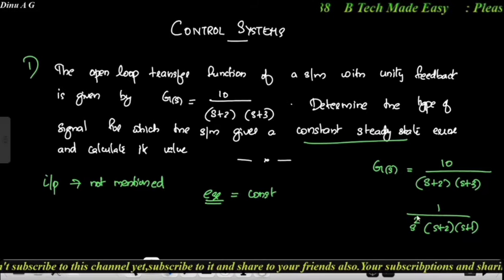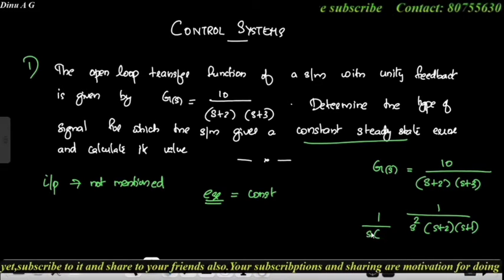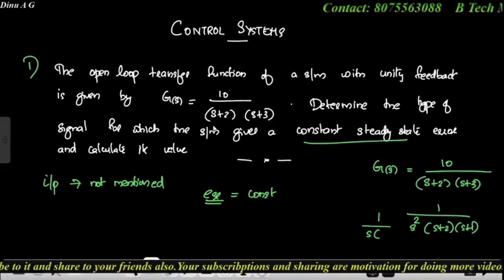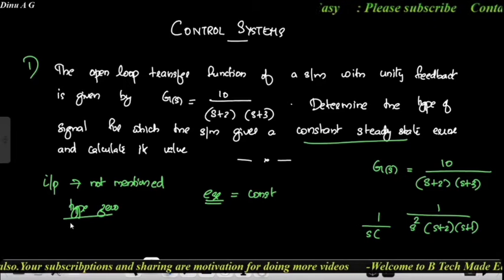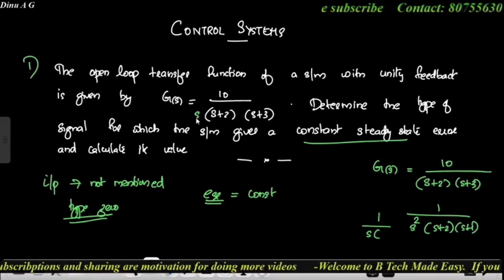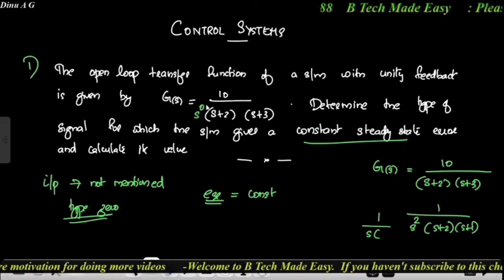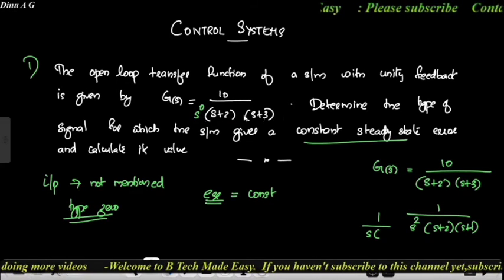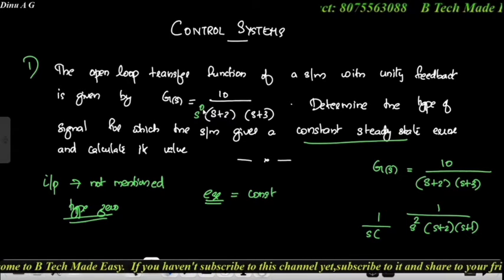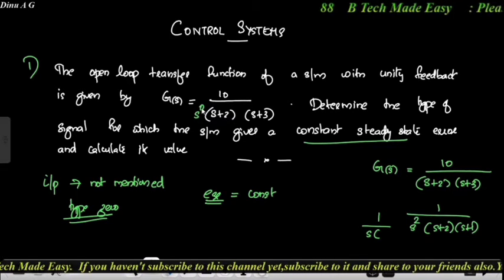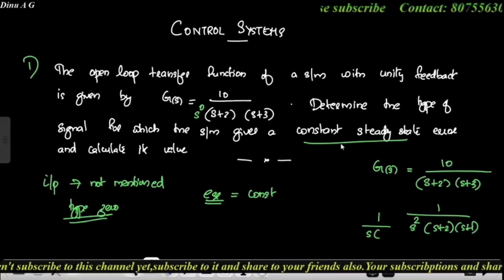Type 2 system means s² in the denominator. Type 1 means 1/(s × something else). Type 0 means s raised to 0 term — no open loop pole at the origin. Type refers to the number of open loop poles at the origin: Type 1 means highest power of s in denominator is 1; Type 0 has s raised to 0.